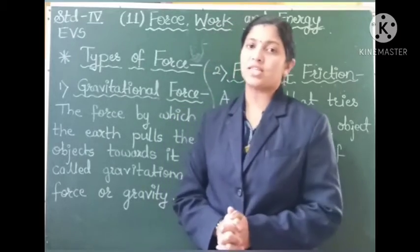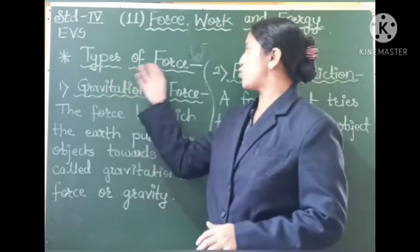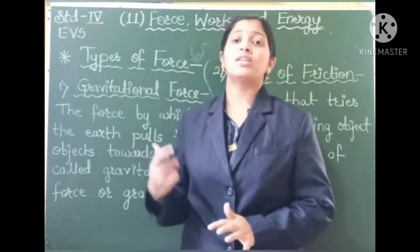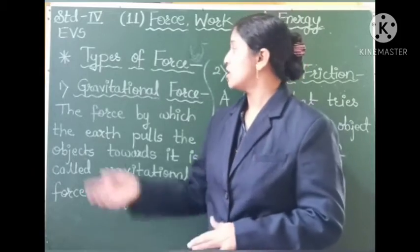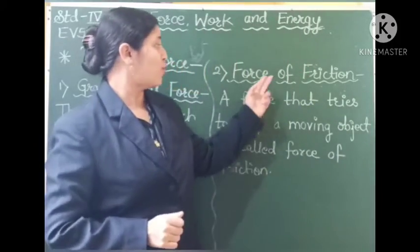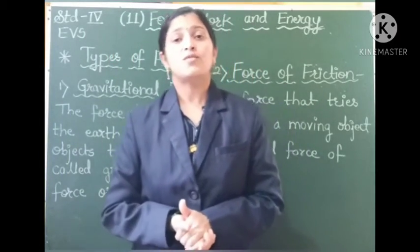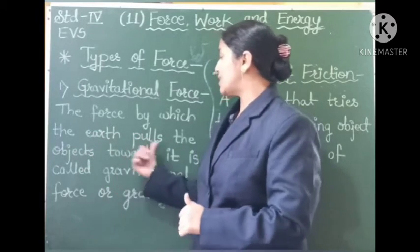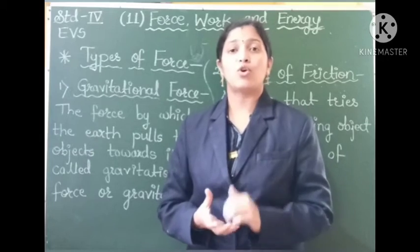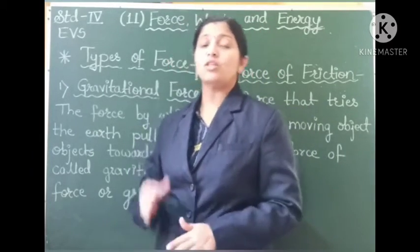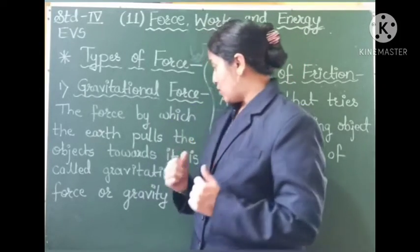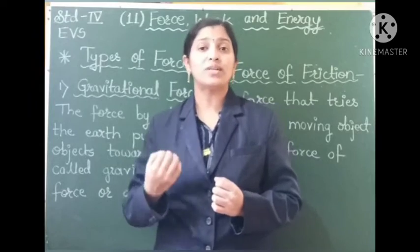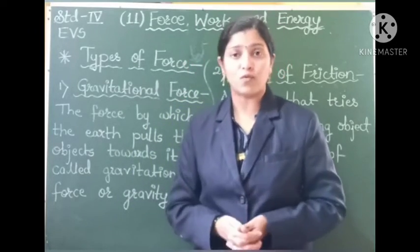Now let us move on to the next subtopic of this lesson: types of force. We learned that a push or pull applied on any object is called force. There are two types of force. The first is gravitational force and the second is force of friction. The definition for gravitational force is: the force by which the earth pulls objects towards it is called gravitational force. We also call it gravity.